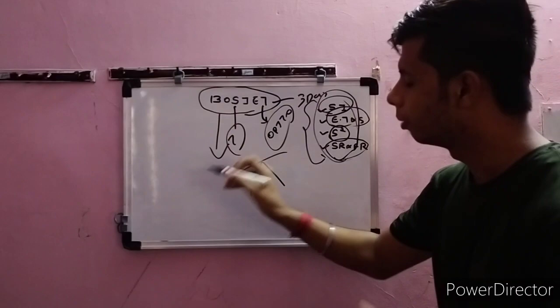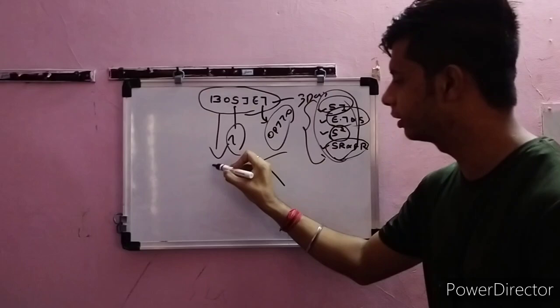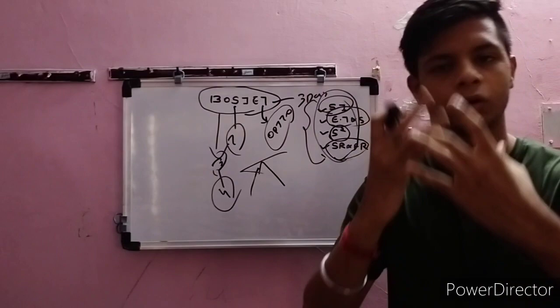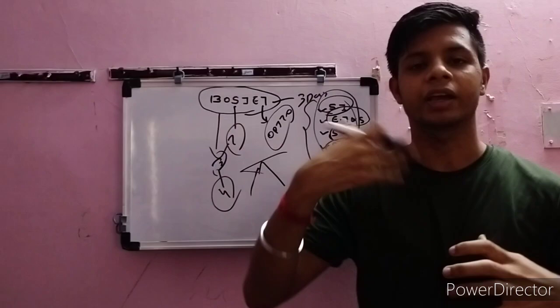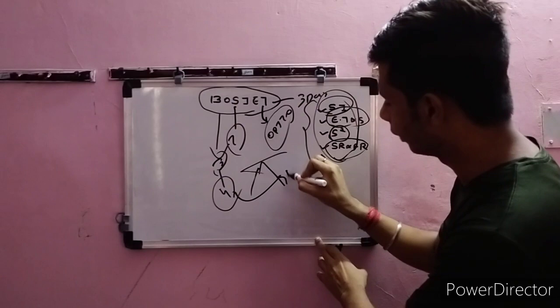Now for both theory and practical: BOSIET is a three-day course, and the validity of the certificate is four years. After four years, you need refresher training. If you don't complete the refresher, your certificate expires and you need to redo the full BOSIET course, paying the full fee and attending all three days again. So within four years, you need to renew your certificate.